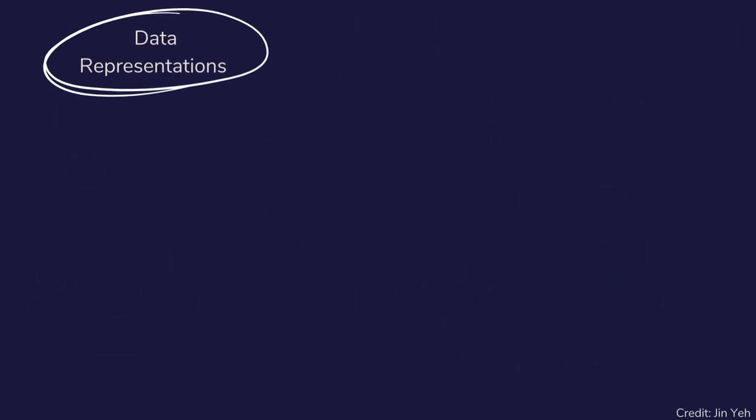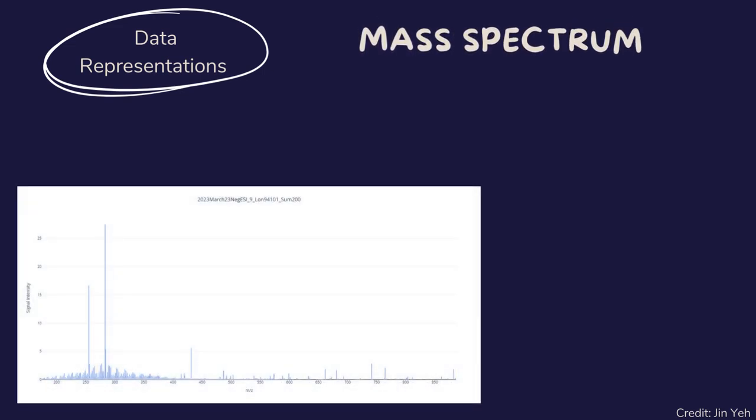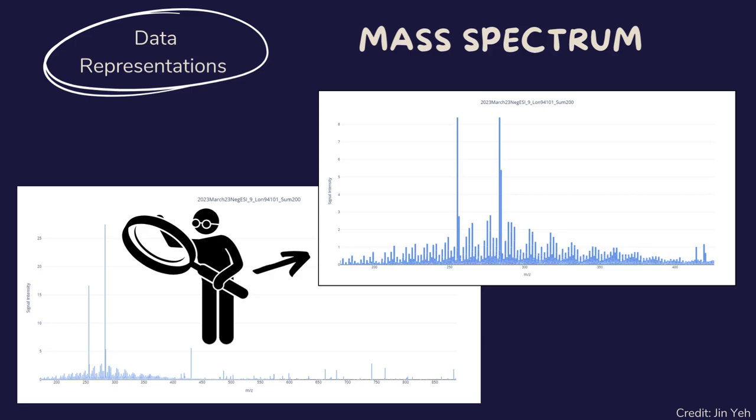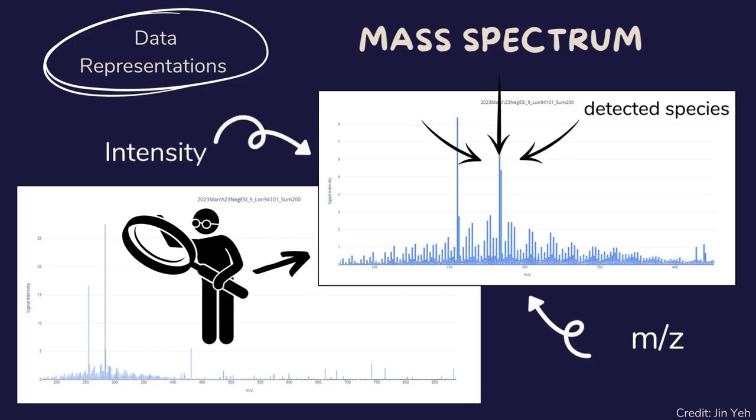Different types of plots help to interpret and analyze the data, so let's start with a classic mass spectrum. The detected species appear in a resulting spectrum as peaks at a particular mass-to-charge ratio on the x-axis and their relative abundance, i.e. intensity, on the y-axis.